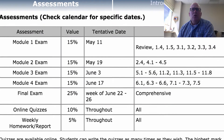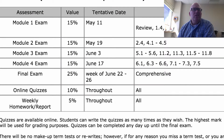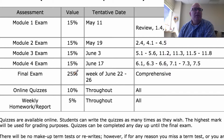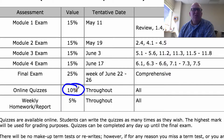In terms of assessments for the course, we've got basically four modules, so you're going to get four exams worth 15% each. Your final exam is worth 25%, so that's 85% all together. The last 15% are on weekly things — there are some online quizzes worth 10%, and there are about 10 or 11 of those.